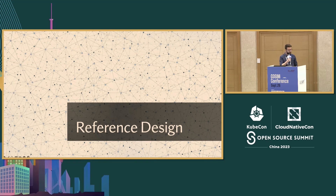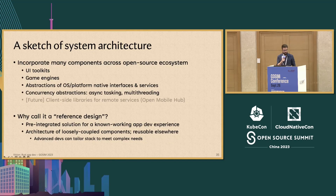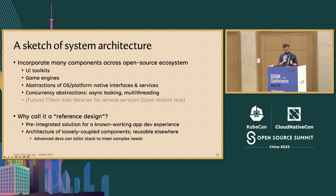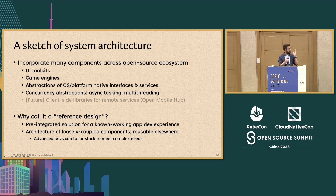What would a reference design look like? I want to briefly touch on what we think the system architecture could look like. With the goal of incorporating many components across the open source ecosystem, we'd integrate UI toolkits, potentially game engines, abstractions of the OS platform, Rust-friendly interfaces to underlying native SDKs, concurrency abstractions, multitasking, async runtimes, and in the future, client-side libraries for remote services like Google Mobile Services through something like Open Mobile Hub. But that's a future goal — first, we'll target the local device infrastructure.